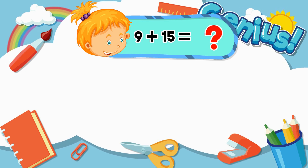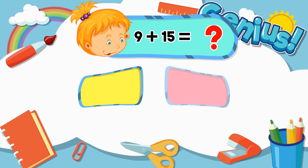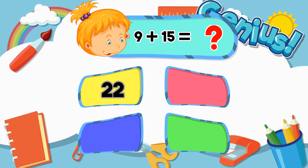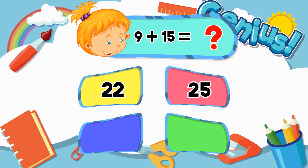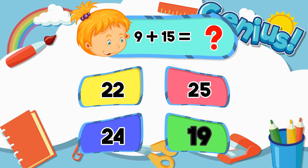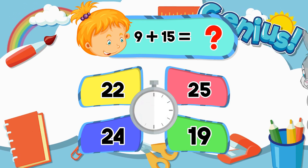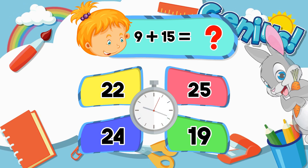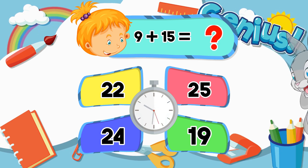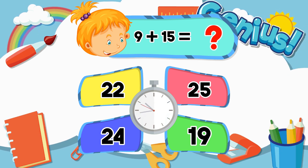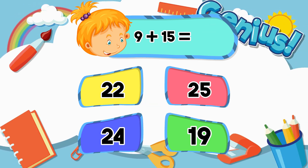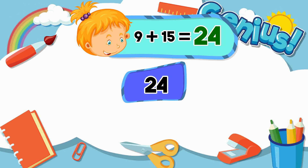What is 9 plus 15? Options: 22, 25, 19. The correct answer is 24.